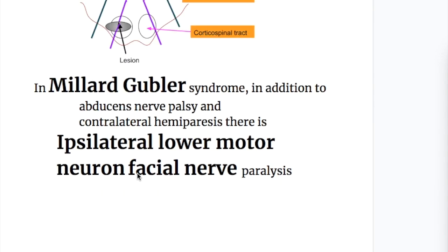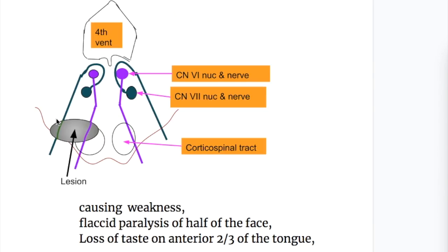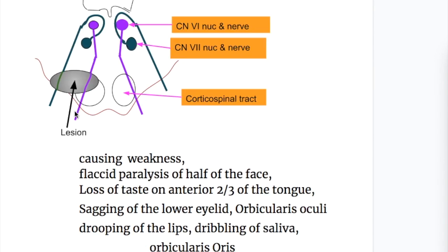In Millard-Gubler syndrome, in addition to abducens nerve palsy and contralateral hemiparesis, there is ipsilateral lower motor neuron type facial nerve paralysis. This lesion involves both the 6th and 7th cranial nerves along with the corticospinal tract. The facial nerve lesion causes weakness and flaccid paralysis of half of the face, and loss of taste on the anterior two-thirds of the tongue. The posterior one-third taste of the tongue is supplied by the ninth glossopharyngeal nerve.